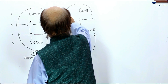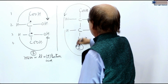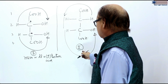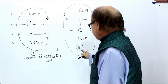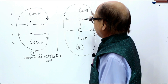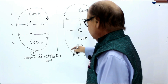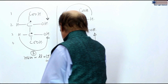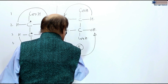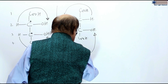The rotation of plane of polarized light by the second optical isomer of tartaric acid is in the anti-clockwise direction. Therefore, it is L or R-minus tartaric acid.